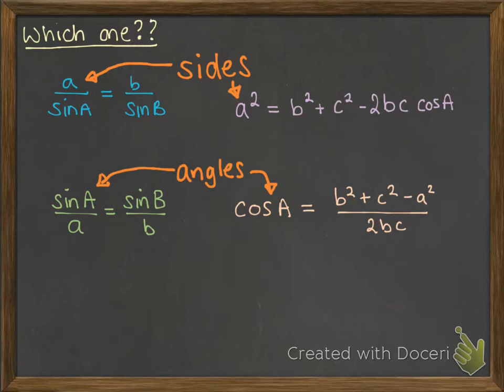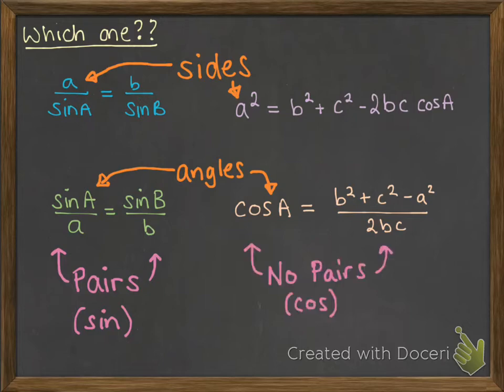And then the other key, so say you know that you're looking for a side, you've got two of those formulae to choose from. You now need to think, do I have matching pairs or not? So for the sine rule, everything comes in matching pairs. So the angle with its opposite side will always be listed, and you'll have two of those. Now if you don't have matching pairs, if you've got sides without the angle opposite to it, then you'll be using the cosine rule.